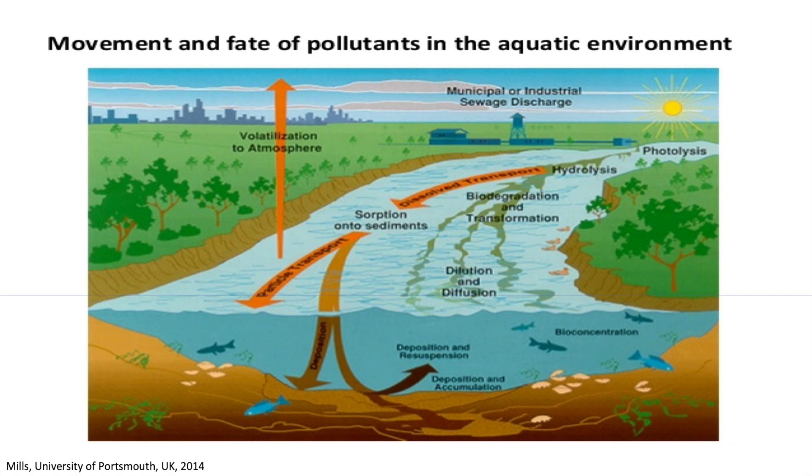When antibiotics reach the water, there are two main processes that occur: either the compound stays in the water phase and moves along, or it interacts with the sediments and stays in certain places. Whether that happens depends on the antibiotic compound and can vary by class. That's what makes studying these compounds complicated — not all antibiotics are going to behave the same. If you study one class of antibiotics, you can't necessarily say the same thing about another class.